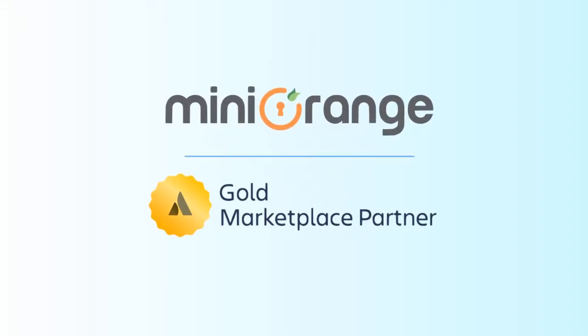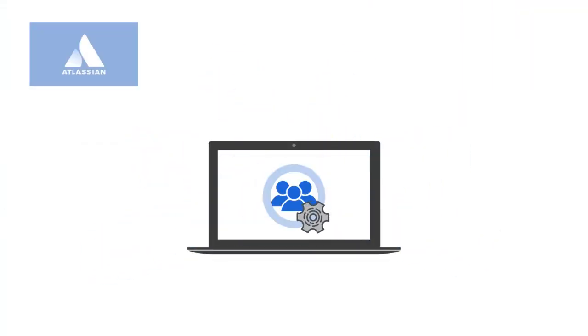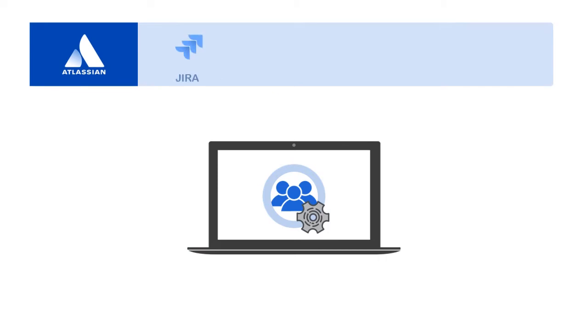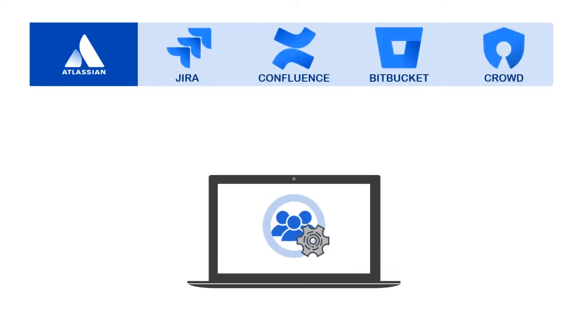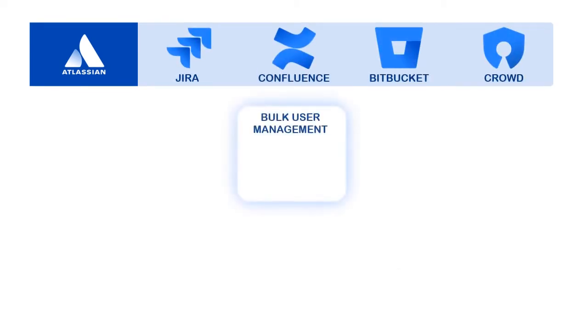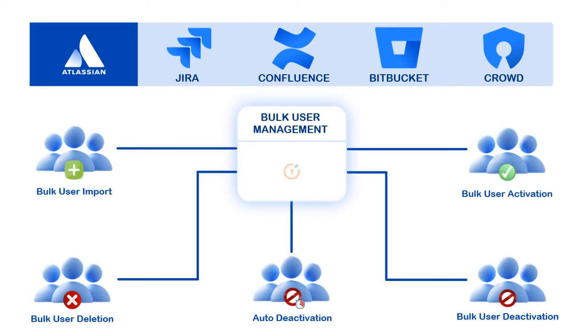Welcome to Minirange. Managing a large number of users on Atlassian products like Jira, Confluence, Bitbucket, and Crowd is made simple with a Bulk User Management add-on from Minirange.